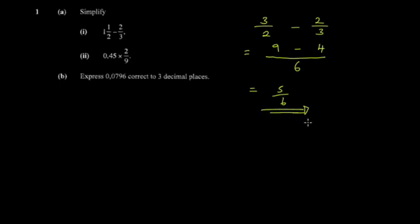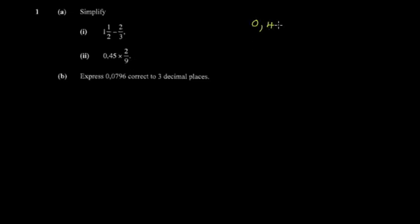The next part says multiply 0.45 by two over nine. You have a decimal times a fraction. This is non-routine — you can get fraction times fraction, decimal times decimal, or decimal times fraction as we have here. The reason I say non-routine is you have to inspect what you have first.